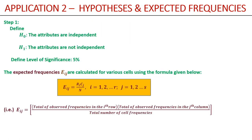Next we define the hypothesis. We have two types: the null hypothesis and the alternate hypothesis. When dealing with two attributes, we assume them to be independent in the null hypothesis and dependent in the alternate hypothesis. That is how we define the null and alternate hypothesis in all our problems here.